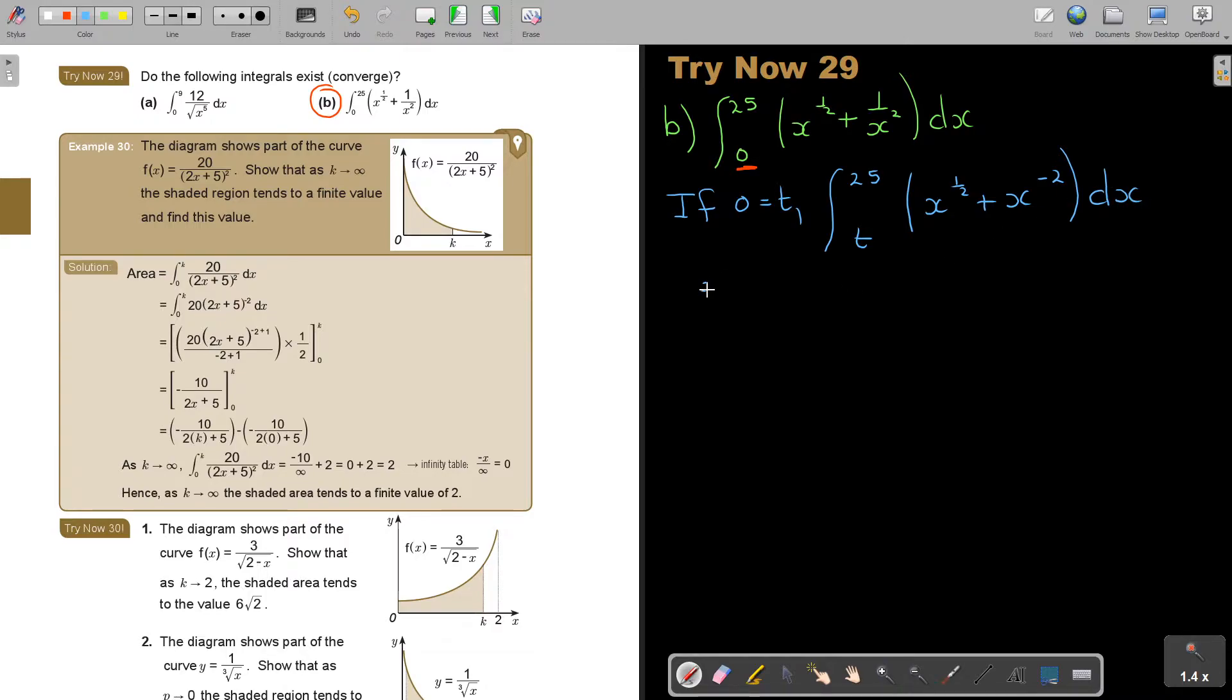And that is going to give me, now, if I'm integrating, so it's x, it's a half plus 1, so it's 3 over 2, divided by 3 over 2, plus x to the negative 2 plus 1, that's negative 1, divided by negative 1, evaluated from T to 25.